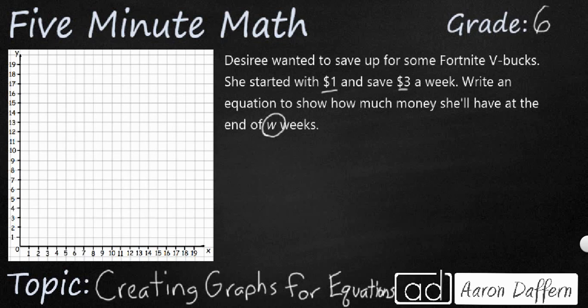So that's going to be our unknown. Let's start by just making a table. Let's figure out what we know first to try to figure out whether this is an additive or multiplicative relationship. So let's just keep track of our weeks over here. So at the end of zero weeks, that means before she even starts saving, how much money does she have? She actually starts with $1.